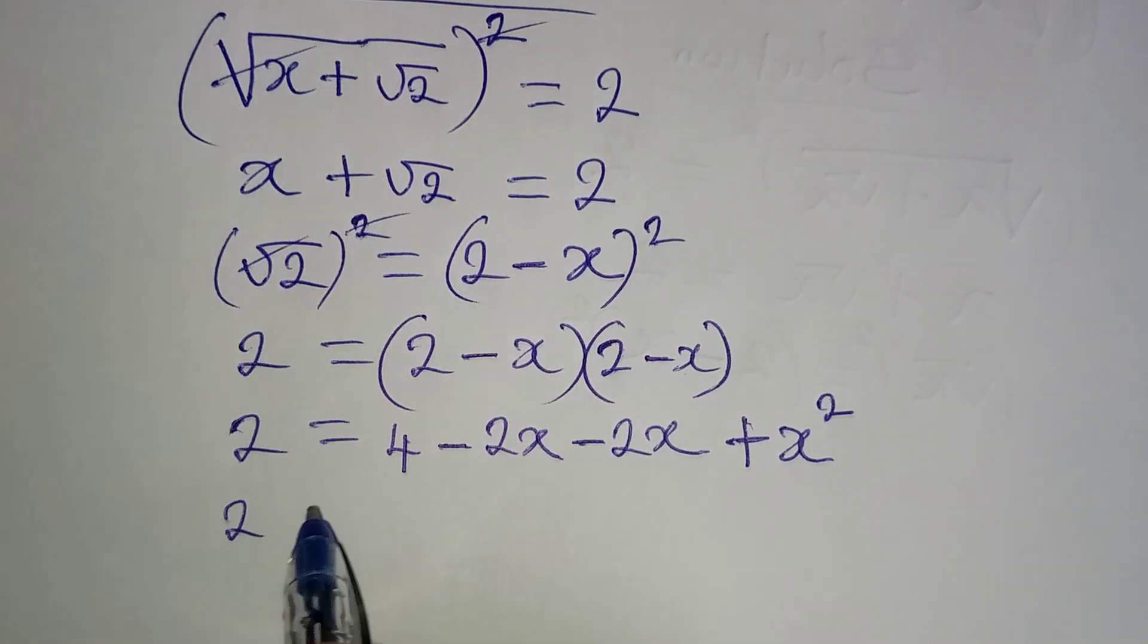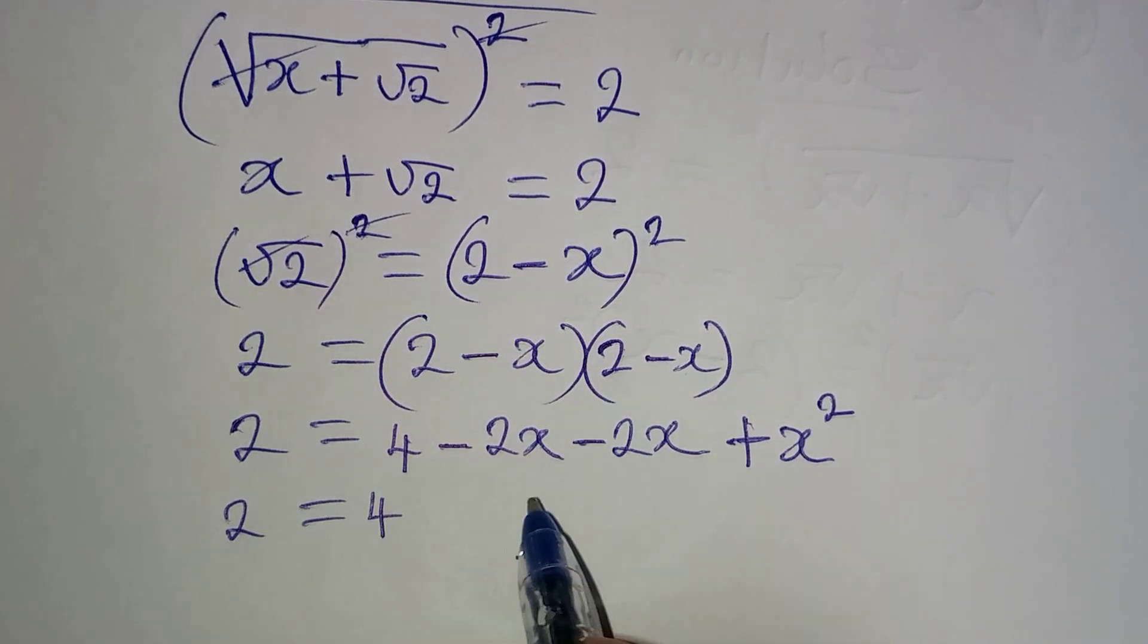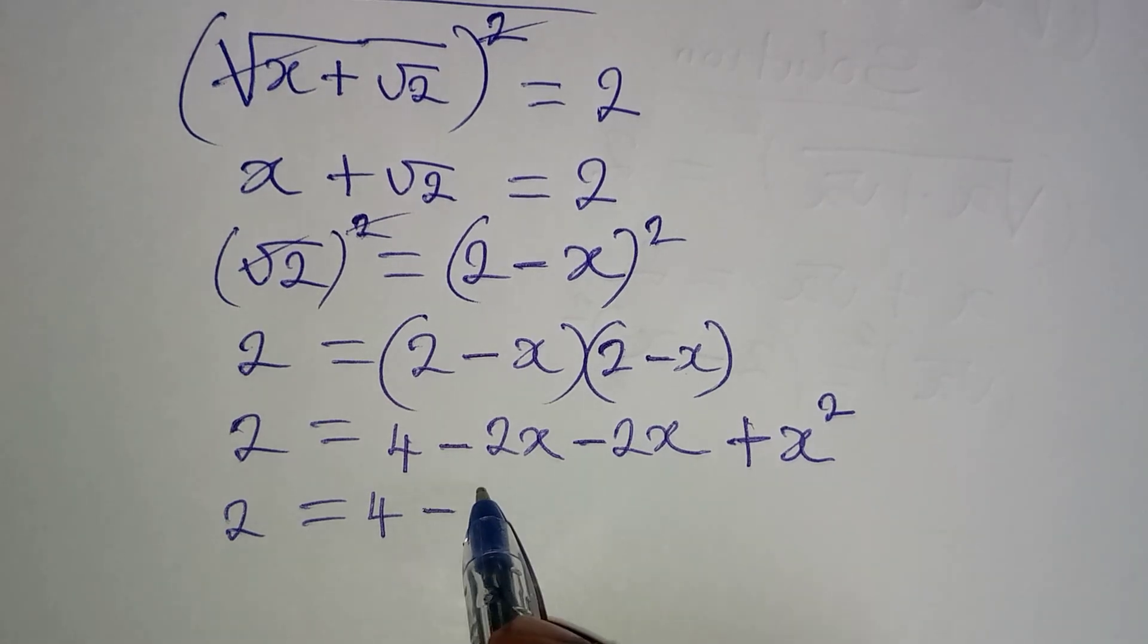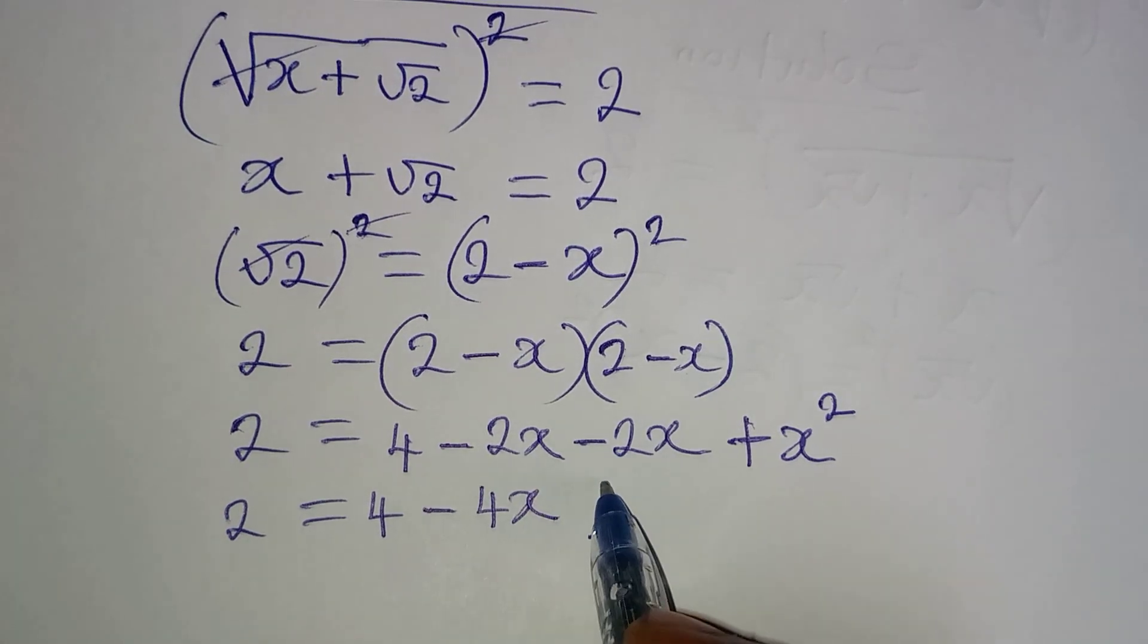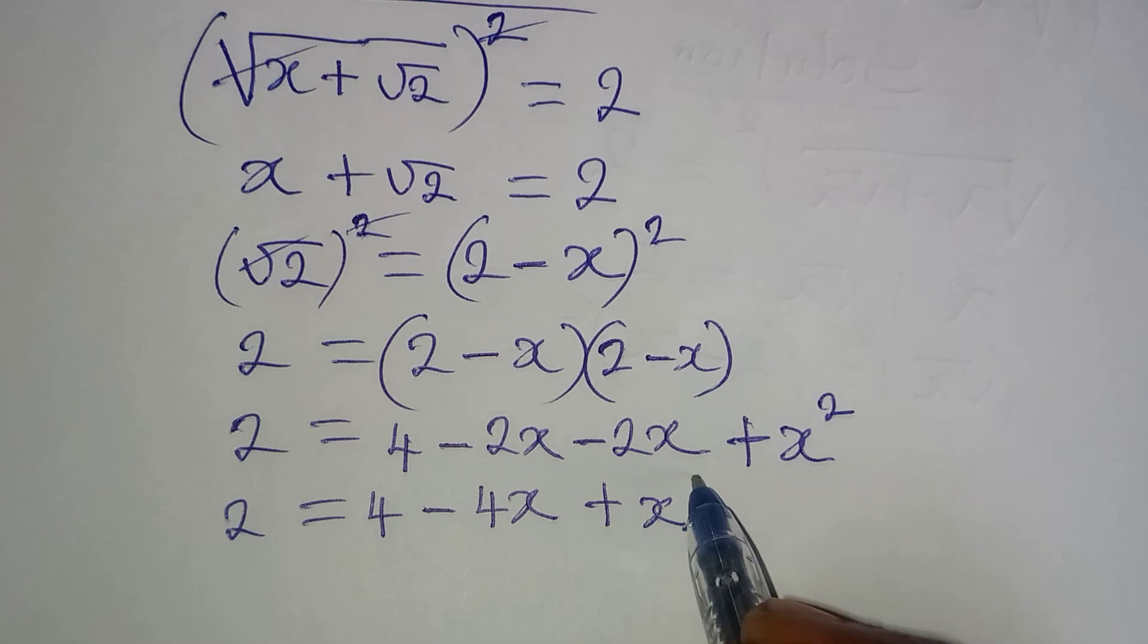And then if I take a step further, 2 will be equal to 4 minus 2x minus 2x will give us minus 4x. Then I have plus x squared.